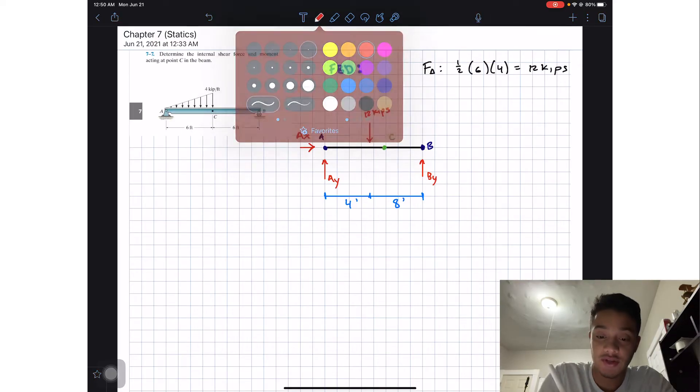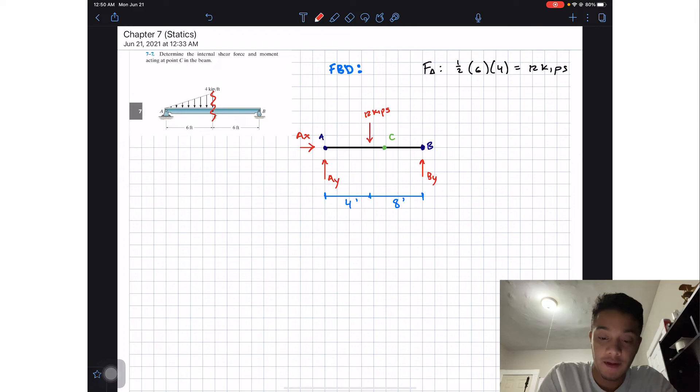So we're going to section it and call it A-A. We're going to do a free body diagram of A-A and I'm going to choose the right side.